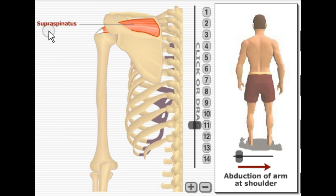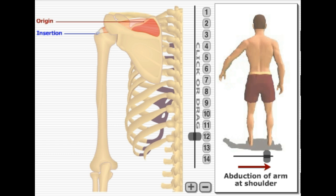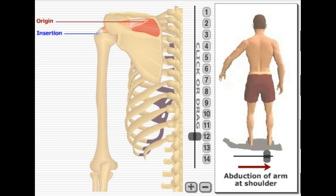Here we're looking at the supraspinatus. It originates on the supraspinatus fossa of the scapula and inserts on the greater tubercle of the humerus. The action it performs is abduction of the arm at the shoulder.